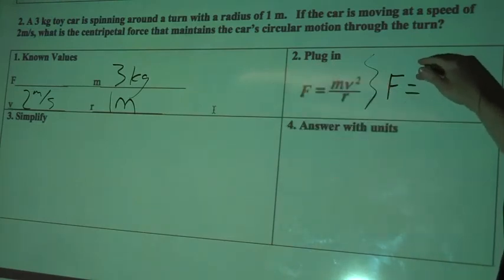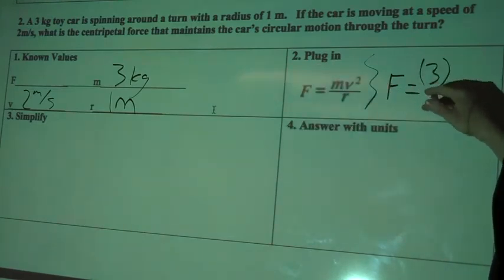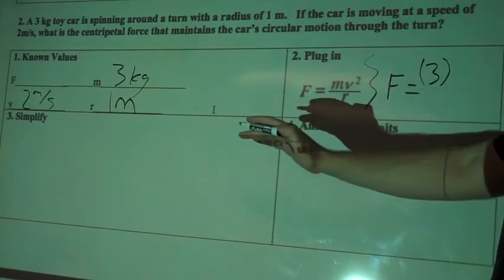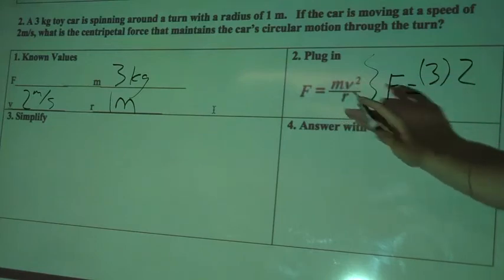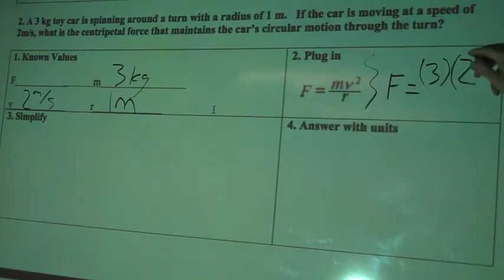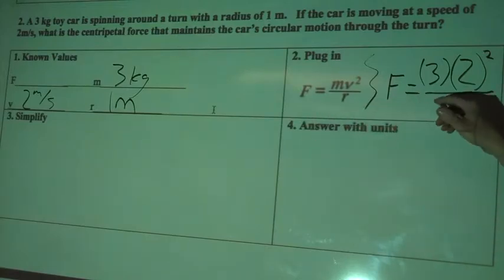We know that the mass was three kilograms on this problem, and I'll put that in parentheses. I know the velocity is two meters per second. But remember in this equation, it's v squared. So I'm going to write a squared up there above that two. And the radius was one meter.